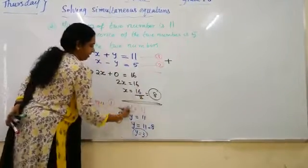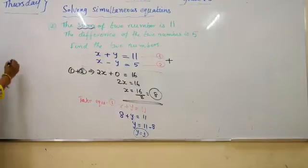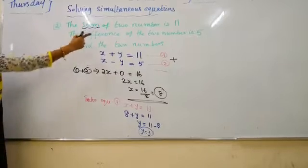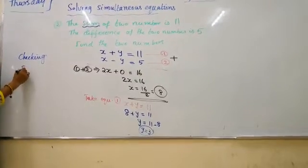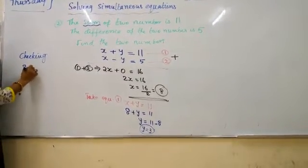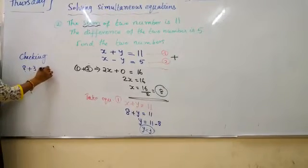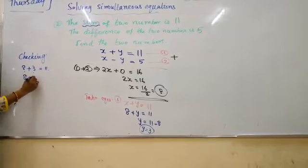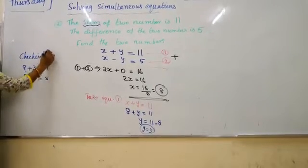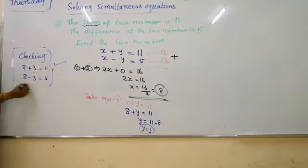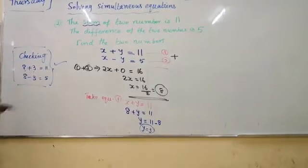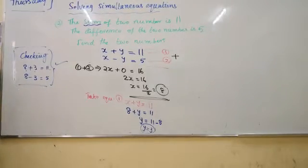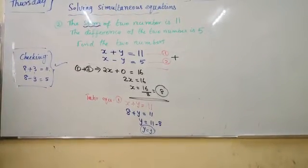We got x and y. For checking, the sum of the two numbers, so the number is 8, another number is 3. When you add together we got 11. And we are subtracting, checking method is correct. It is not compulsory to write this. This is for you to check that the values which you find are correct or wrong.